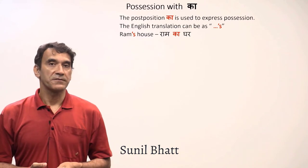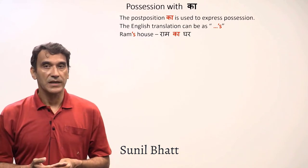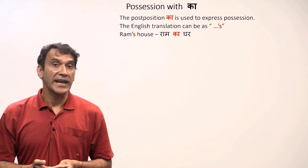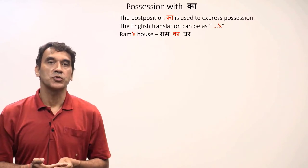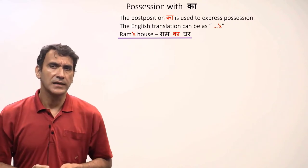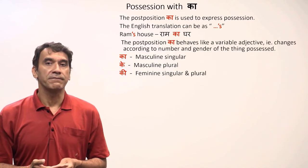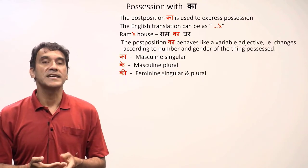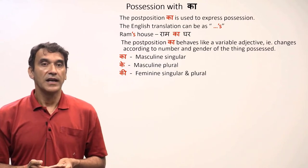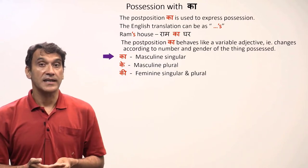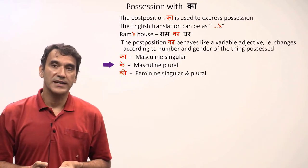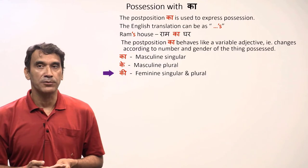The next grammar point is possession with 'ka'. The post position 'ka' expresses possession and can be translated as apostrophe-s in English, for example, Ram's house: Ram ka ghar. The post position 'ka' behaves like a variable adjective — it changes according to the number and gender of the thing possessed. 'Ka' is for masculine singular, 'ke' is for masculine plural, and 'ki' is for feminine singular and plural.